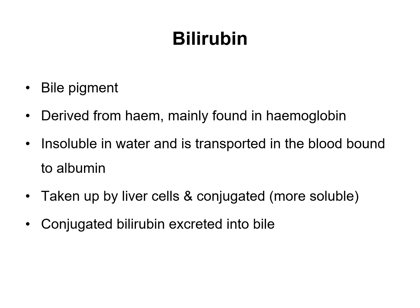Bilirubin is a biopigment derived from heme, which is mainly found in haemoglobin. It is insoluble in water and transported in the blood bound to albumin — at this point it is unconjugated. It is then taken up by hepatocytes and becomes conjugated, which is more soluble. Conjugated bilirubin is then excreted into bile. In summary, unconjugated bilirubin is insoluble in water, while conjugated bilirubin is soluble.